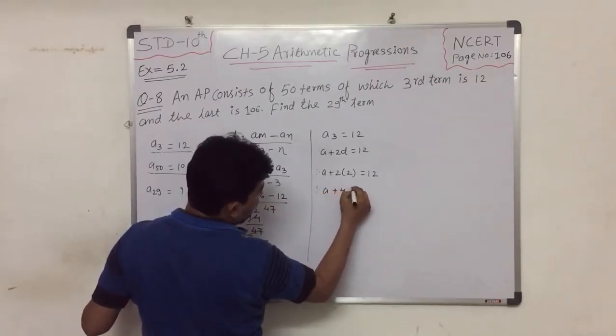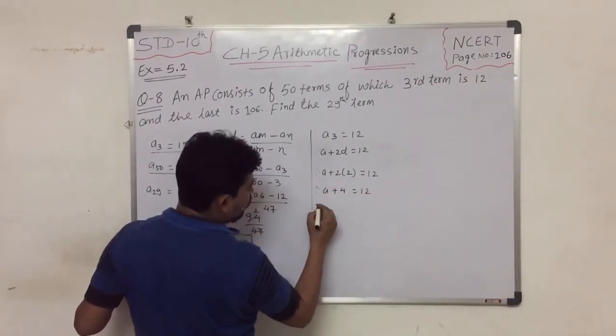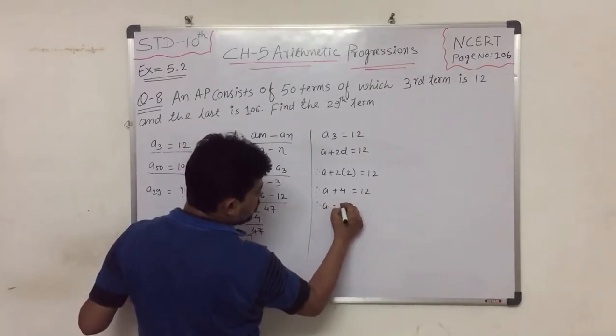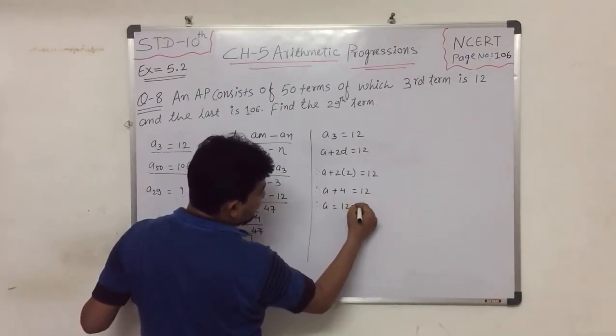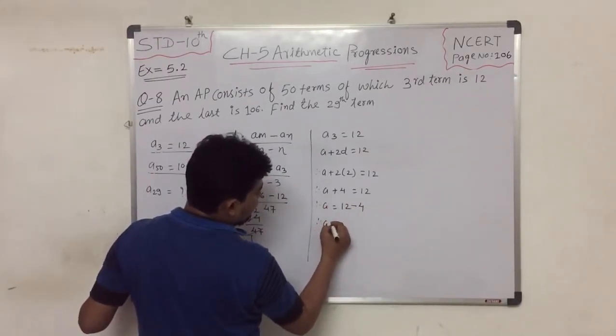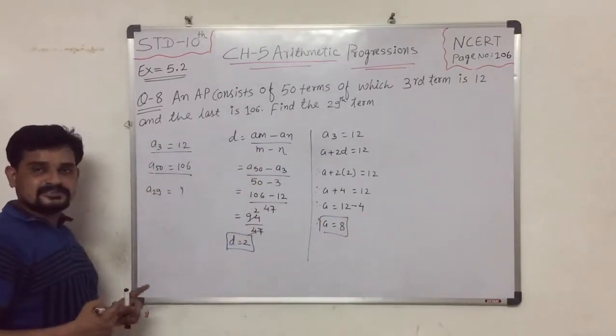Therefore, using A3 equals A plus 2D, we have 12 equals A plus 4. So A is equal to 8.